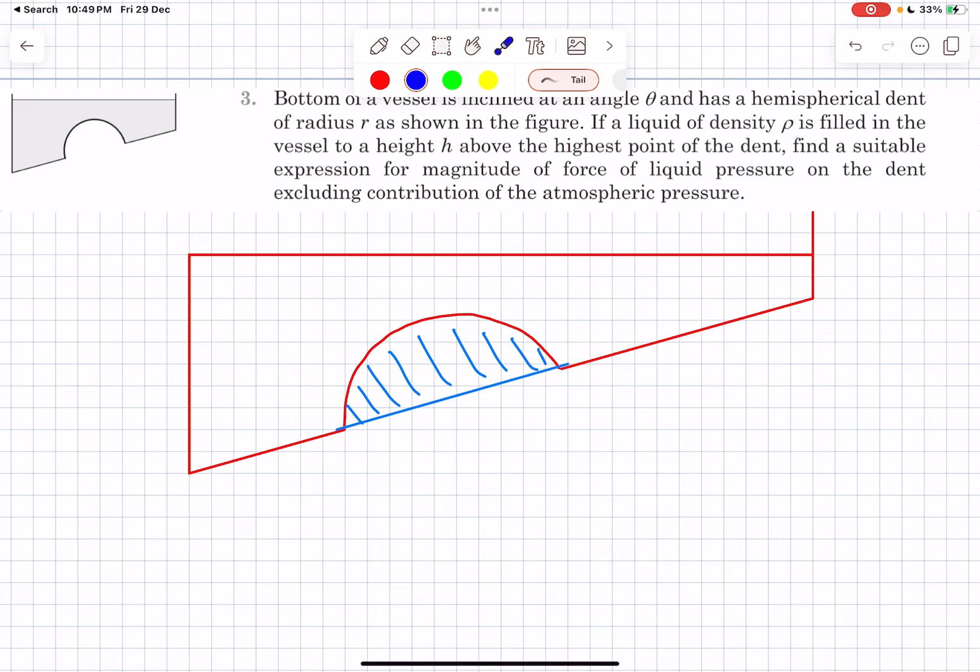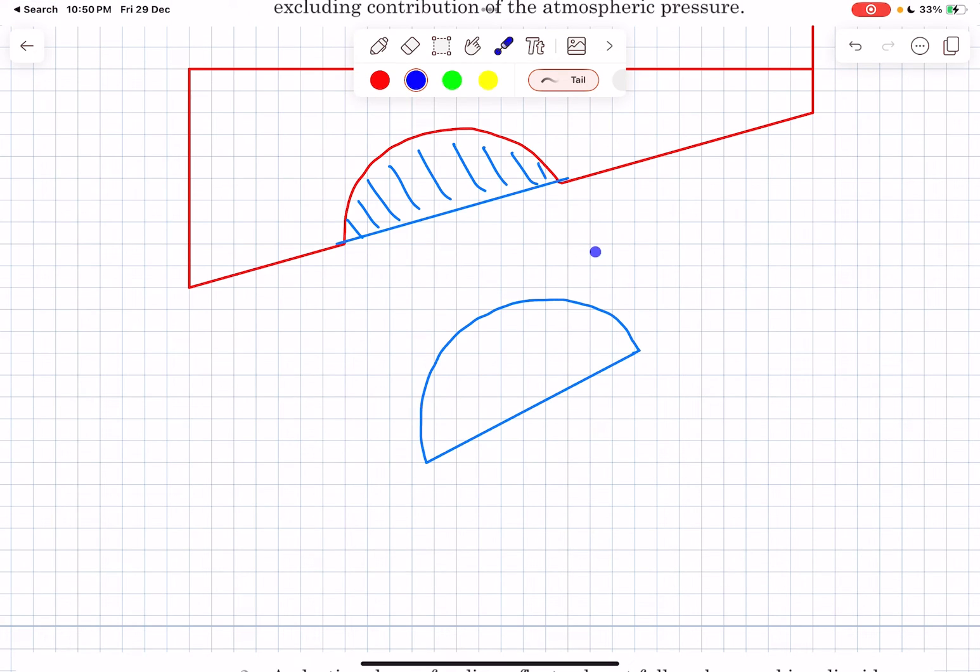So the benefit of assuming fluid to exist over here is that we can draw its FBD and directly calculate the force acting on the hemispherical surface with the help of the fluid FBD. That is what we are going to be doing.